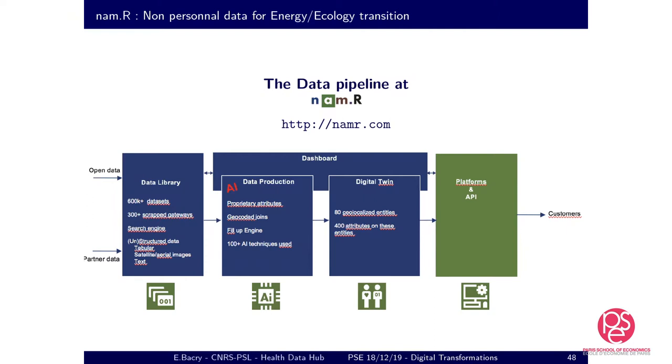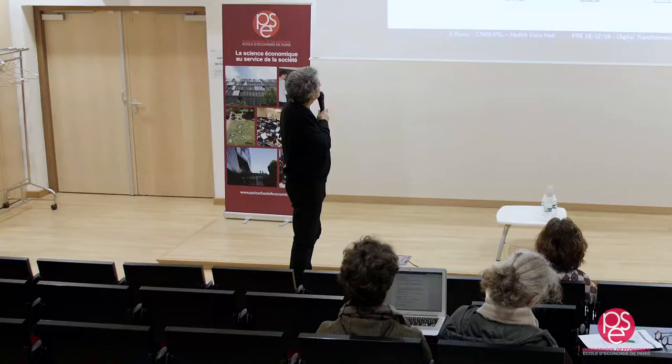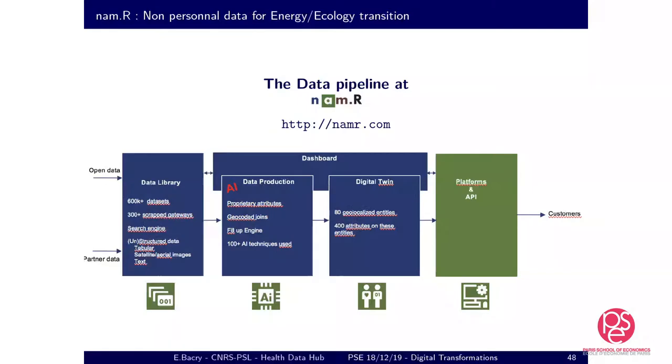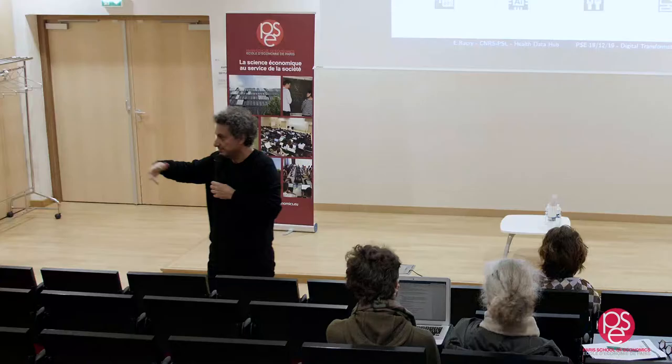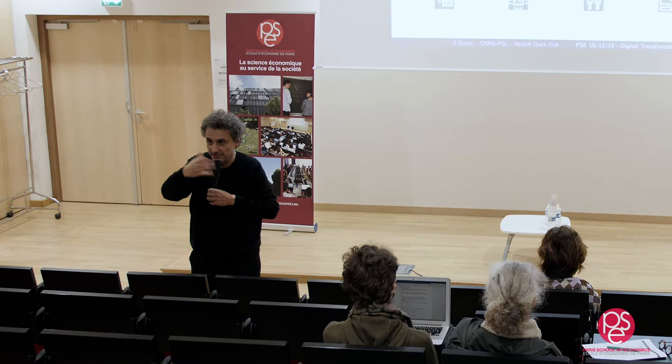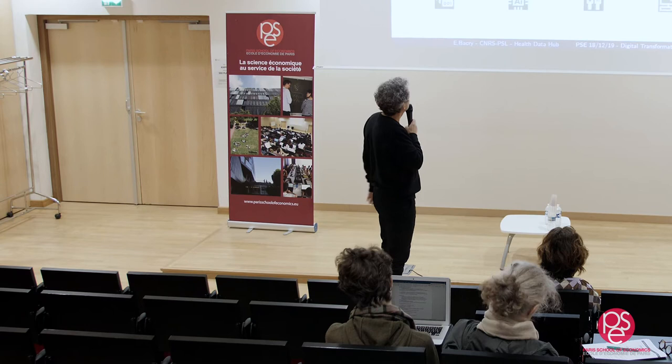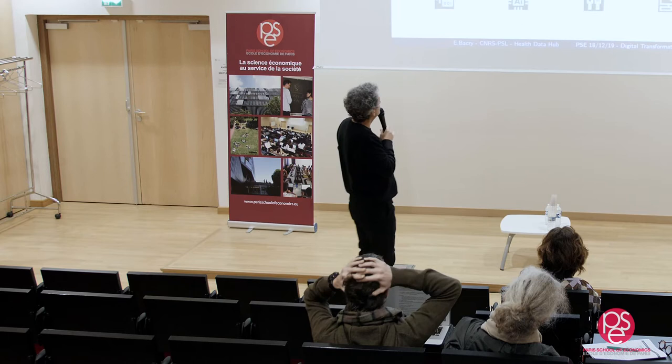We have more than 600,000 datasets — structured data like NC data, but also unstructured data like text and images. From unstructured data we extract geolocalized information about entities like parcels, buildings, and fields. We do geocoded joins with a lot of AI. Then we build what we call the digital twin: about 80 different entities — parcels, buildings, fields, companies — with more than 400 attributes for each. We sell this data on platforms.